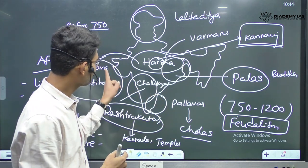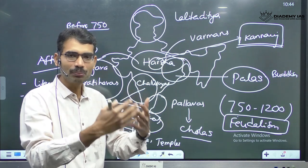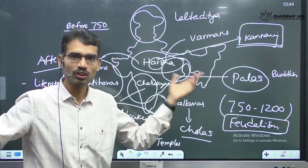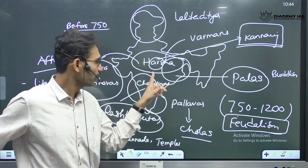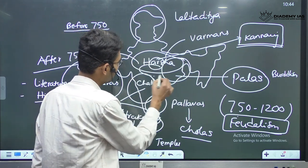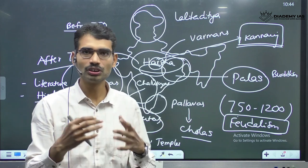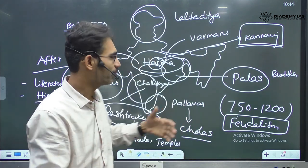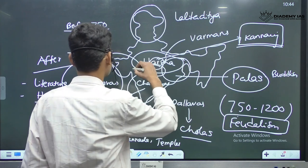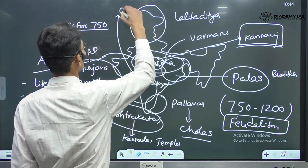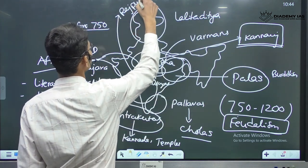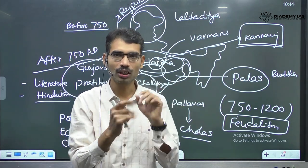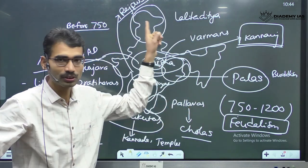Later, these people were replaced by new, smaller dynasties. For example, Khajuraho temples were built during the time of Chandela rulers. By this time period, small, small kingdoms emerged, and combinedly we call them Rajputs. It is the age of Rajputs also.